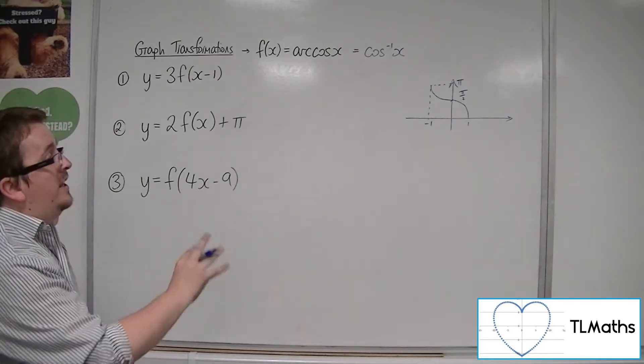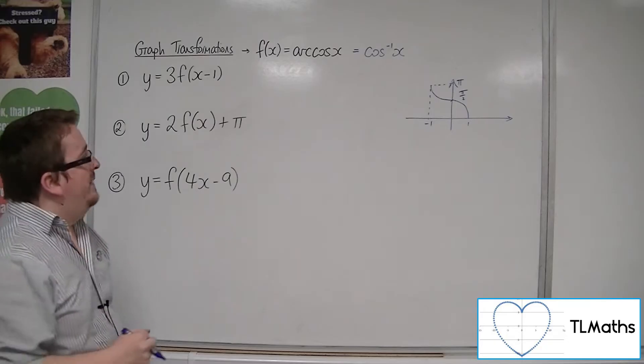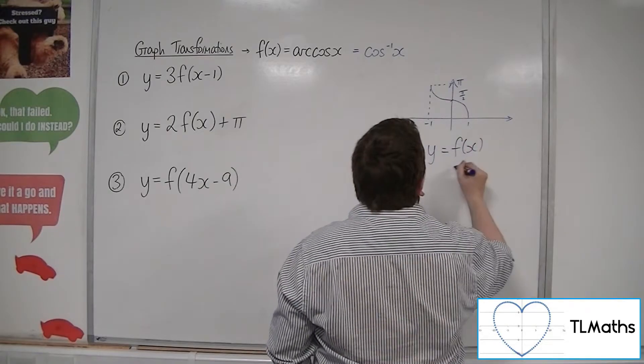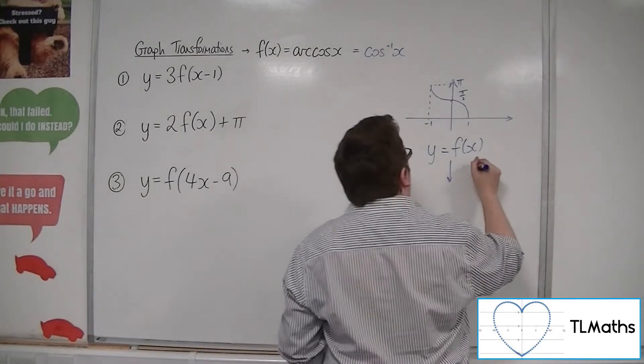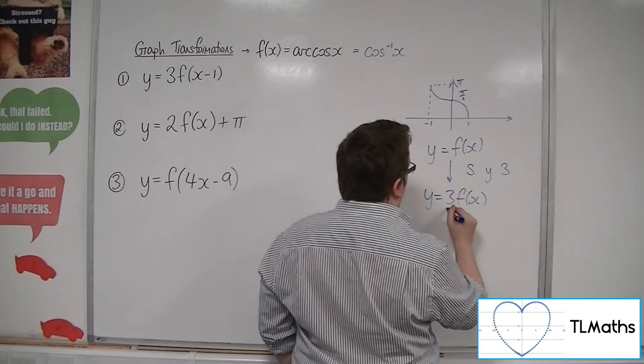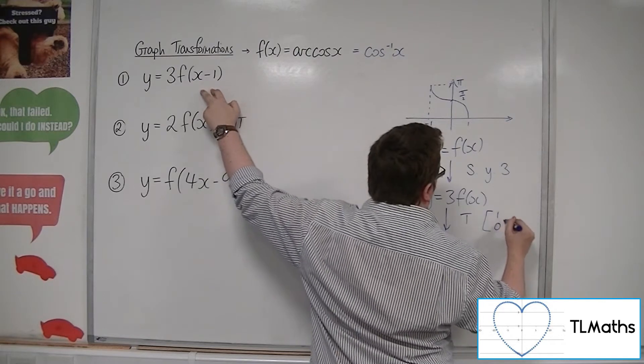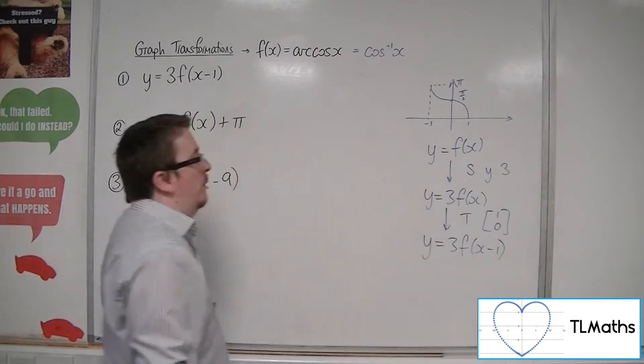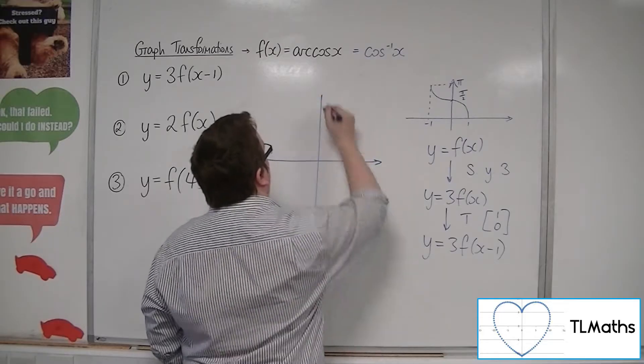So what we're going to do is we're going to use that curve and we are going to apply these transformations to it. Now this first one, we've got y equals 3f of x minus 1. So really it's all about saying what you see. We see that there is a 3 out the front. That's a stretch parallel to the y-axis factor 3. So that would give us the y equals 3f of x. And we've also got this x minus 1. So that's a translation by the vector 1, 0. So that replaces the x with x minus 1. And we get precisely what we wanted. So we can go through this process looking at each of the coordinates in turn and see what's happened.